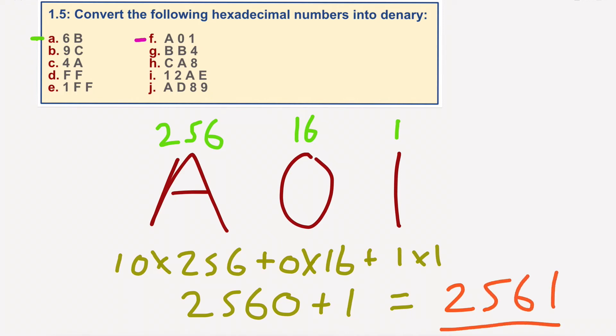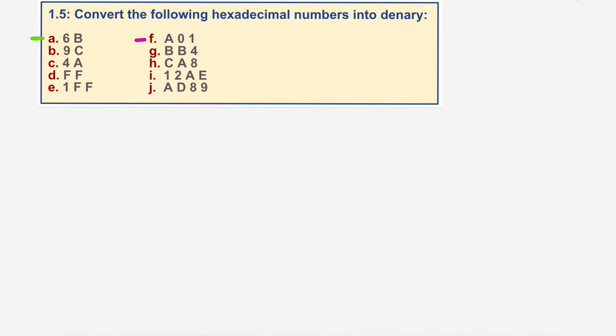Nice and easy. Shall we do the final one? Let's get started with J. So AD89. Now, if we put the numbers in, we've got 1, 16, 256. 16 times 16 is 256.